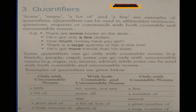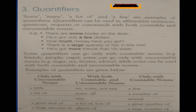Some quantifiers can go only with countable nouns, some can go only with uncountable nouns like sugar, tea, money, advice, while some can be used with both countable and uncountable nouns. Examples of quantifiers used only with uncountable nouns: a little, a bit of, a great deal of, a large amount of. Quantifiers used with both countable and uncountable nouns: no, none, not any, some, all, any, a lot of, lots of, plenty of.